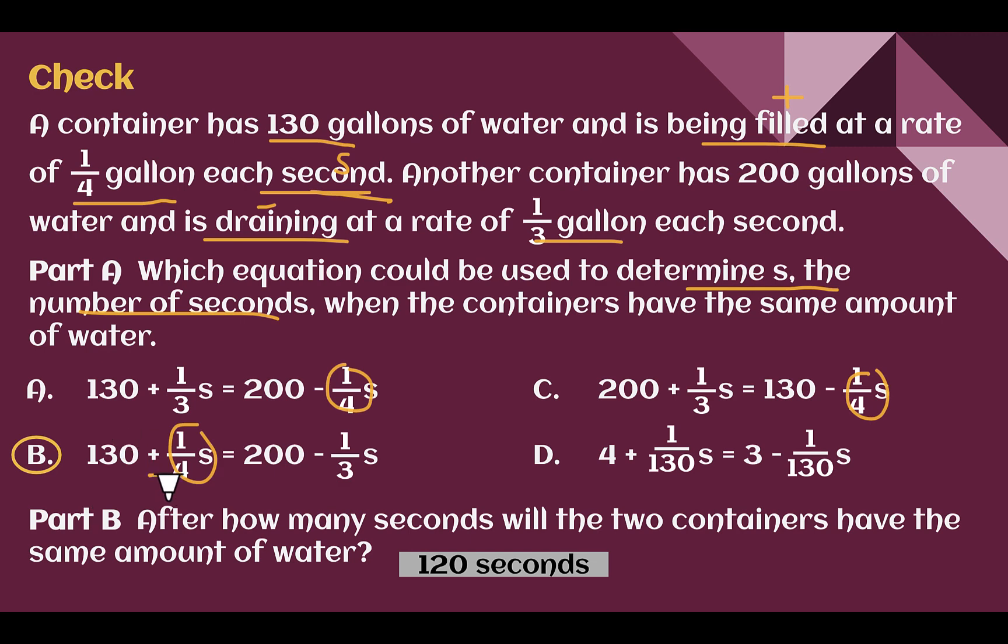To solve this one, I would first make my fractions into common denominators. So four and three would be better with a denominator of 12. One fourth is the same as three twelfths. One third is the same as four twelfths.